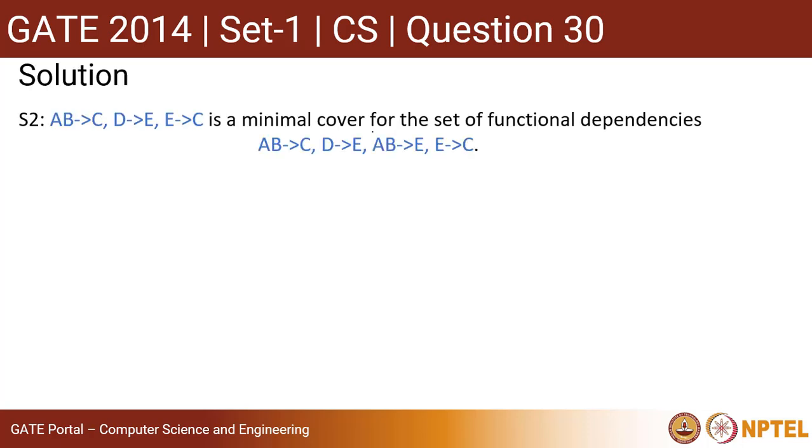So let us check for the second statement. I am having some functional dependencies. I need to check is it a minimal cover for the given functional dependency. What I don't have, I don't have this. So I need to check if AB cover this also.